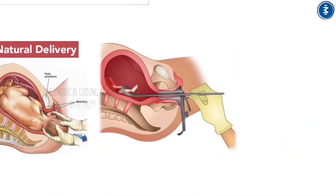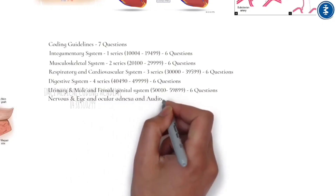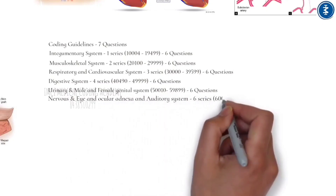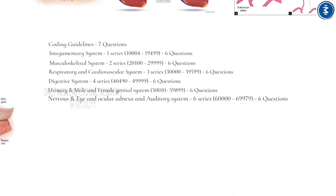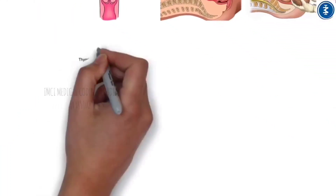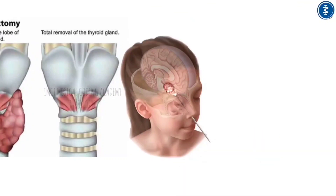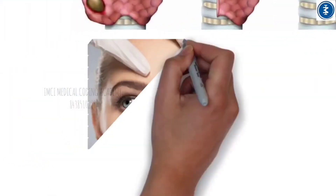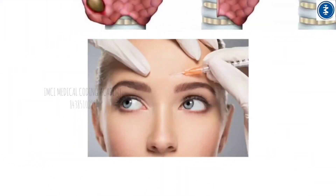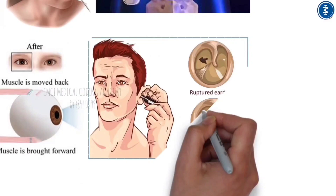The Nervous System, Eye, Ocular Adnexa, and Auditory System (Chapter 6, codes 60000–69979) contributes 6 questions covering nerve, eye, and ear surgeries. Procedures include thyroidectomy, skull base surgery, neurostimulator, chemodenervation, strabismus surgery, tympanoplasty, and eardrum repair.